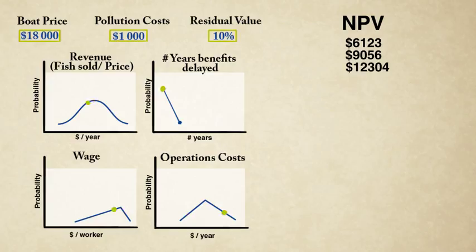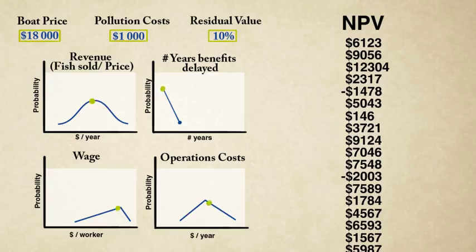It's exactly what we were doing in Excel before, except instead of single numbers, we're drawing from some range of possibilities. Then we'll do it again. Then do it like a thousand more times. This is a Monte Carlo simulation.